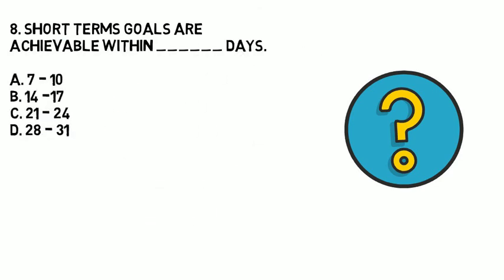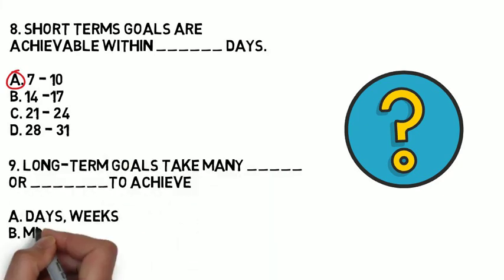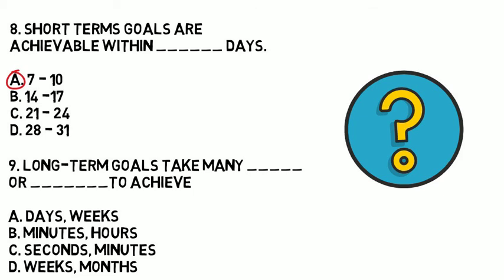Question 8: Short-term goals are achievable within: A. 7 to 10 days, B. 14 to 17 days, C. 21 to 24 days, or D. 28 to 31 days? The correct answer is A — 7 to 10 days. That's the range for short-term goals in the medical field. Question 9: Long-term goals take many blank or blank to achieve. A. Days, weeks; B. Minutes, hours; C. Seconds, minutes; or D. Weeks, or months? The correct answer is D — long-term goals take many weeks or months to achieve.